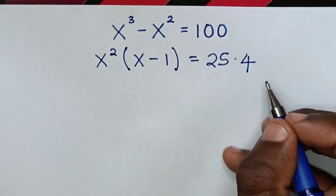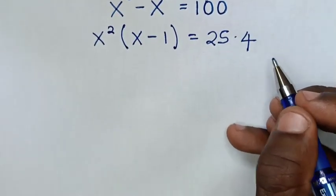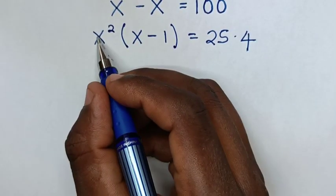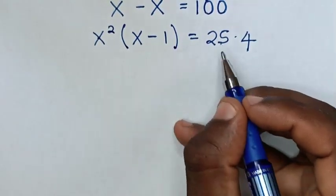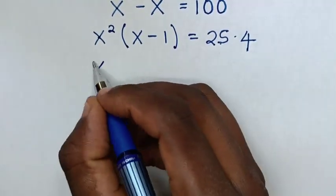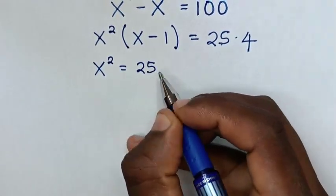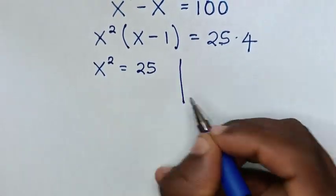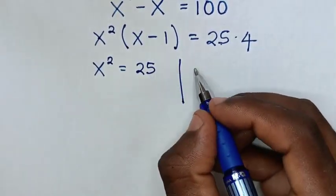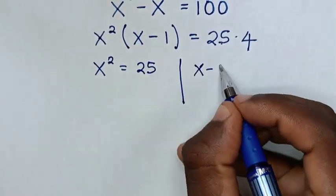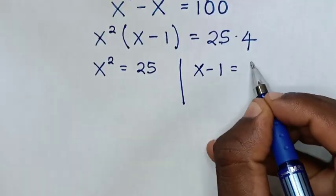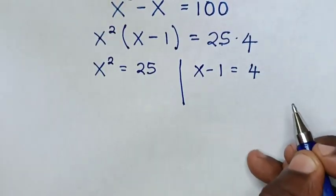In the next step we compare x squared with 25, so x squared is equal to 25, and we compare x minus 1 is equal to 4.